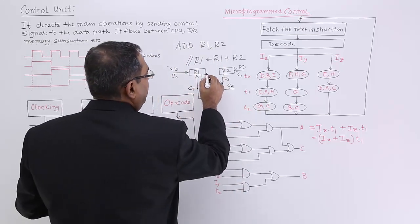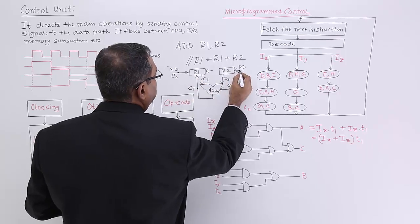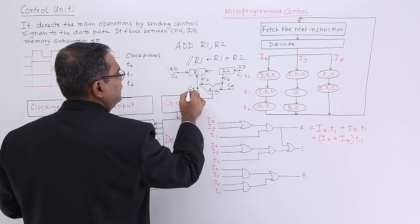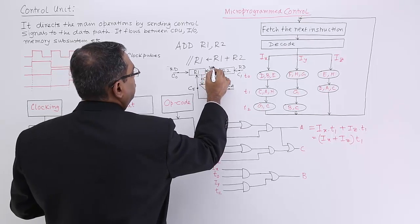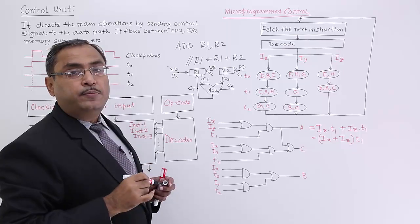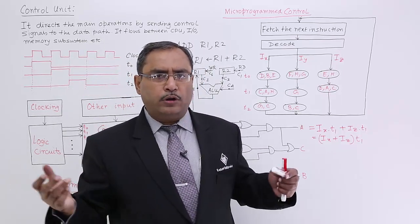Again another control signal, say C5, will be enabled so that the ALU's output will be going to R1. And in the meantime also another control signal will come into play. Let it be C6 which will make this register to be enabled in the write mode.